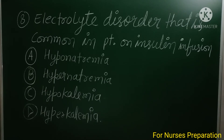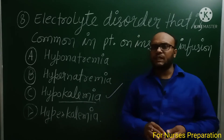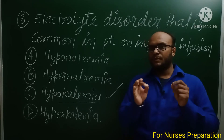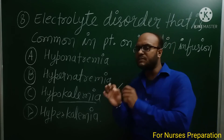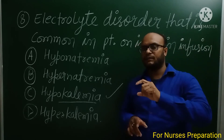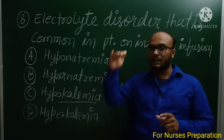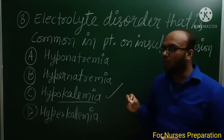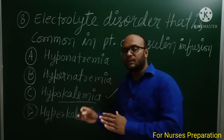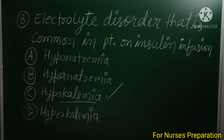The right answer is Option C, hypokalemia. When a patient is on insulin infusion, potassium moves from the extracellular fluid into the intracellular fluid — potassium moves from outside the cell to inside the cell during insulin infusion — so the potassium level in the body decreases. Always remember, when a patient is on insulin infusion, watch out for hypokalemia.